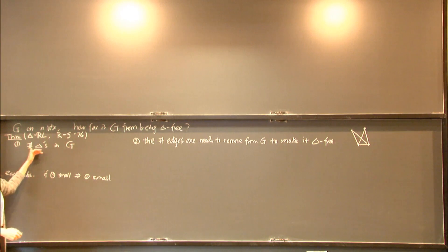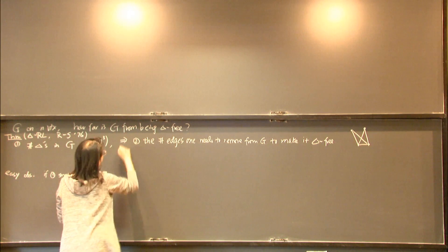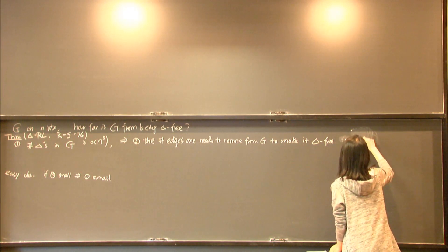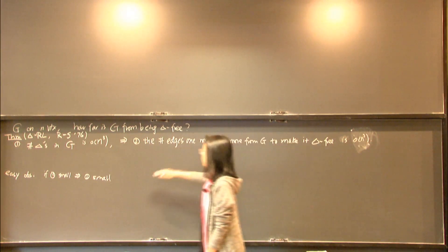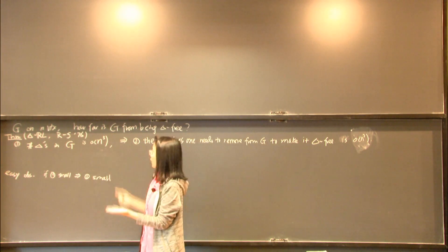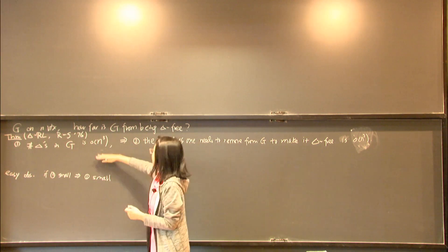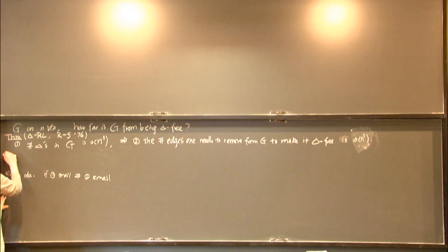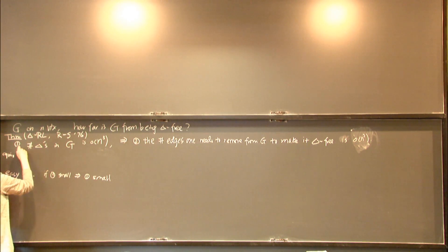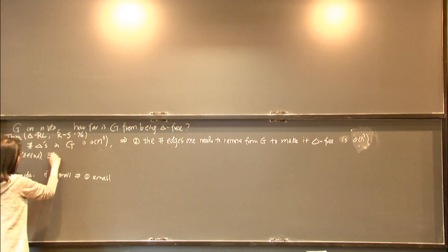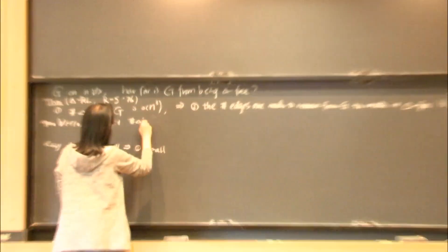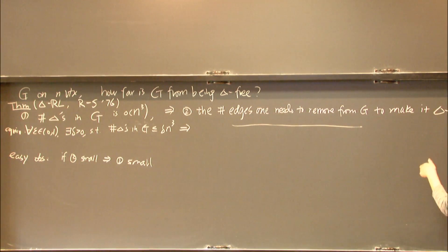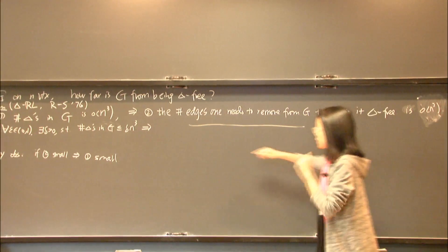Basically what it says is: if the number of triangles in G is little-o of n³, then I only need to remove little-o of n² edges to remove all the triangles. The normalization matters: if I have just one triangle I only need to remove one edge, but if I have 0.001·n³ triangles it's not clear how many edges are needed. More precisely, for any epsilon in (0,1) there exists a delta such that if the number of triangles in G is at most delta·n³, then the number of edges needed to remove to make G triangle-free is at most epsilon·n².